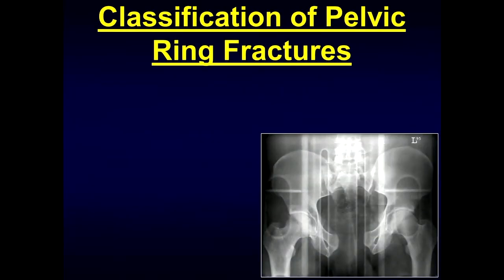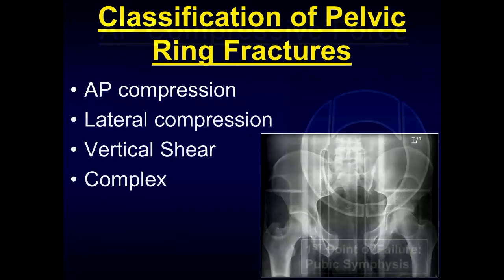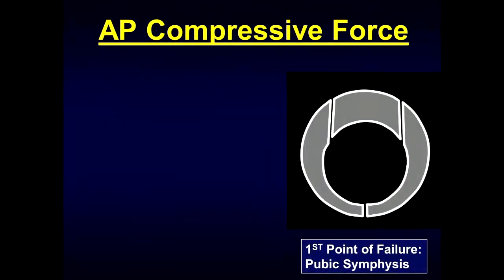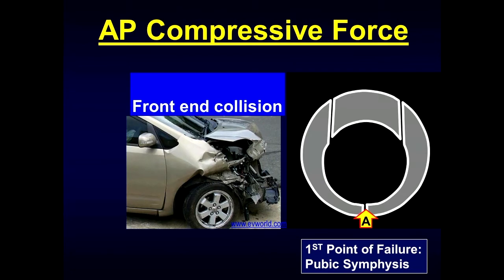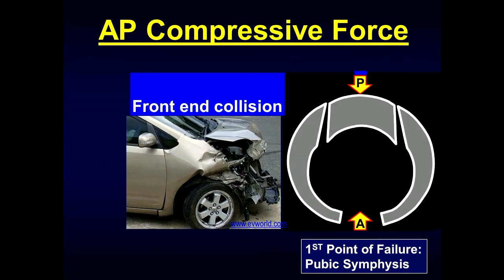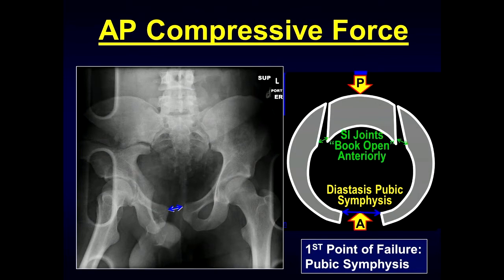Let's talk about the different types of pelvic ring fractures. They can be due to an AP compression force, lateral compression, vertical shear, or complex type injuries. For the AP compressive force, the first point of failure is at the pubic symphysis. This is commonly seen with car accidents following a front-end collision. What occurs is diastasis of the symphysis pubis, the sacroiliac joints can book open anteriorly, and you can also have iliac wing fractures that occur.